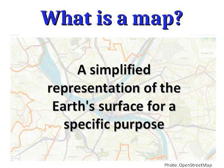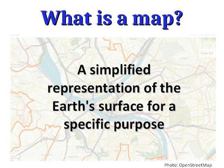So a map is a simplified representation of the Earth's surface for a specific purpose. It takes everything going on on the Earth's surface, selects certain aspects to show on the map, and throws away everything else. A map is going to simplify, focus on certain things to highlight them, and ignore other things — based on what the purpose of the map is.